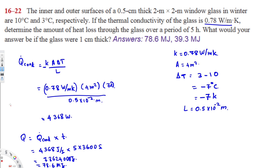For part B, the question asks what the answer would be if the glass were one centimeter thick instead of 0.5 centimeters. Notice that Q is inversely proportional to L. If L is doubled, Q is halved. Since the thickness is going from 0.5 cm to 1 cm — it is doubled — the heat loss will be half.